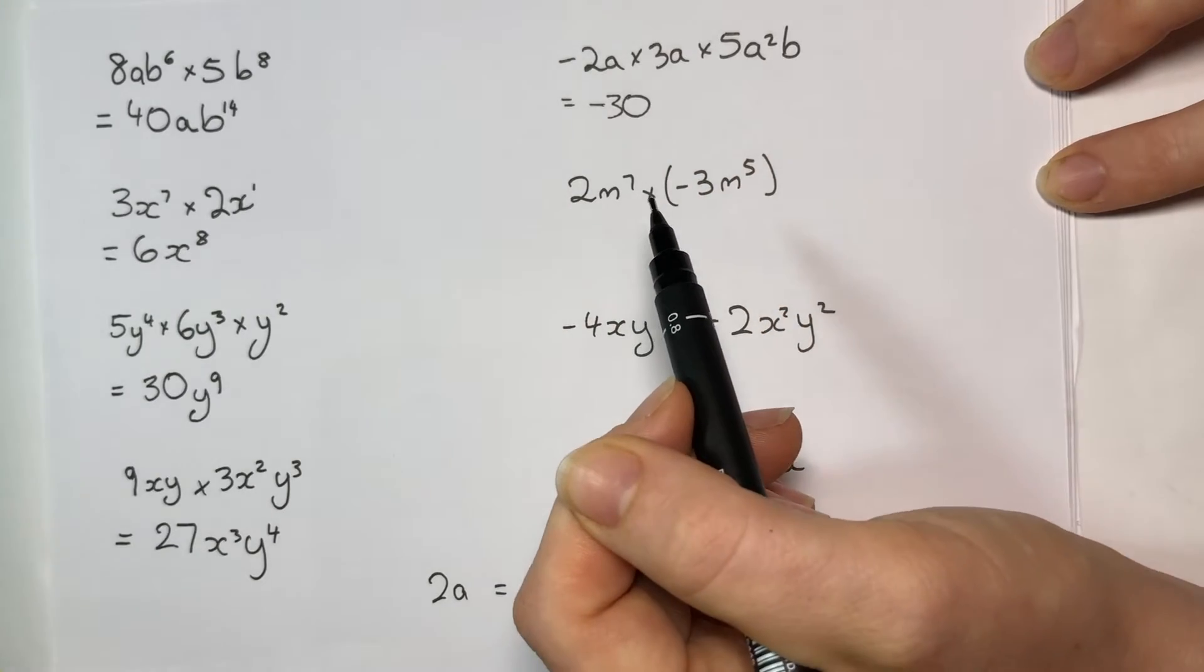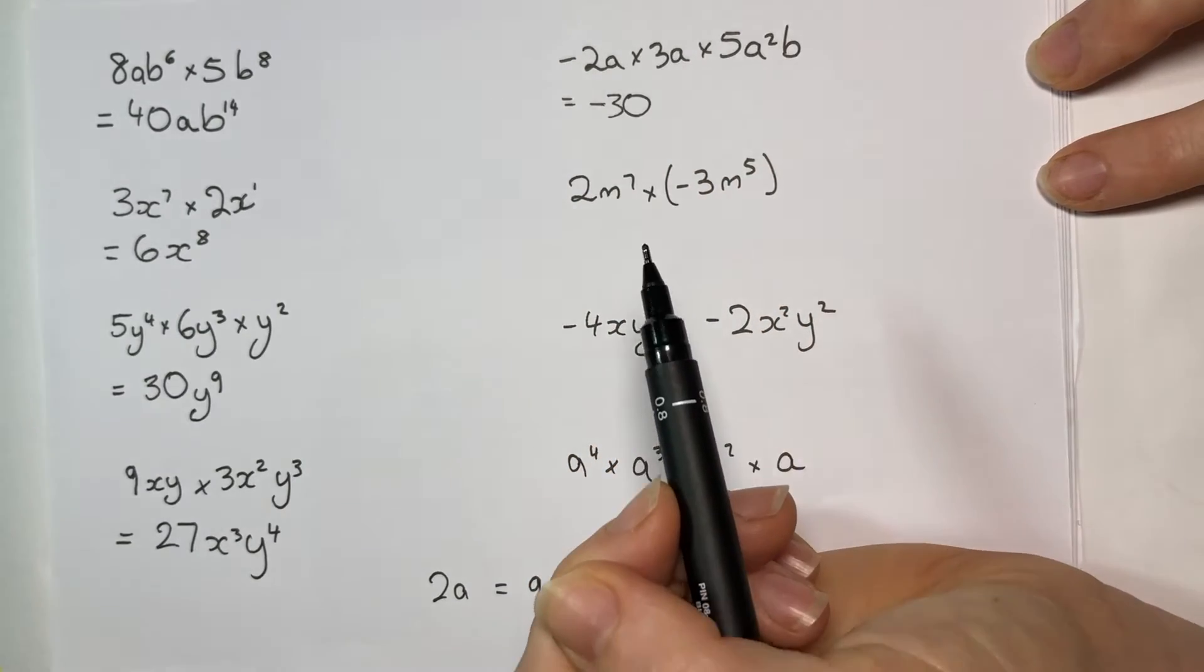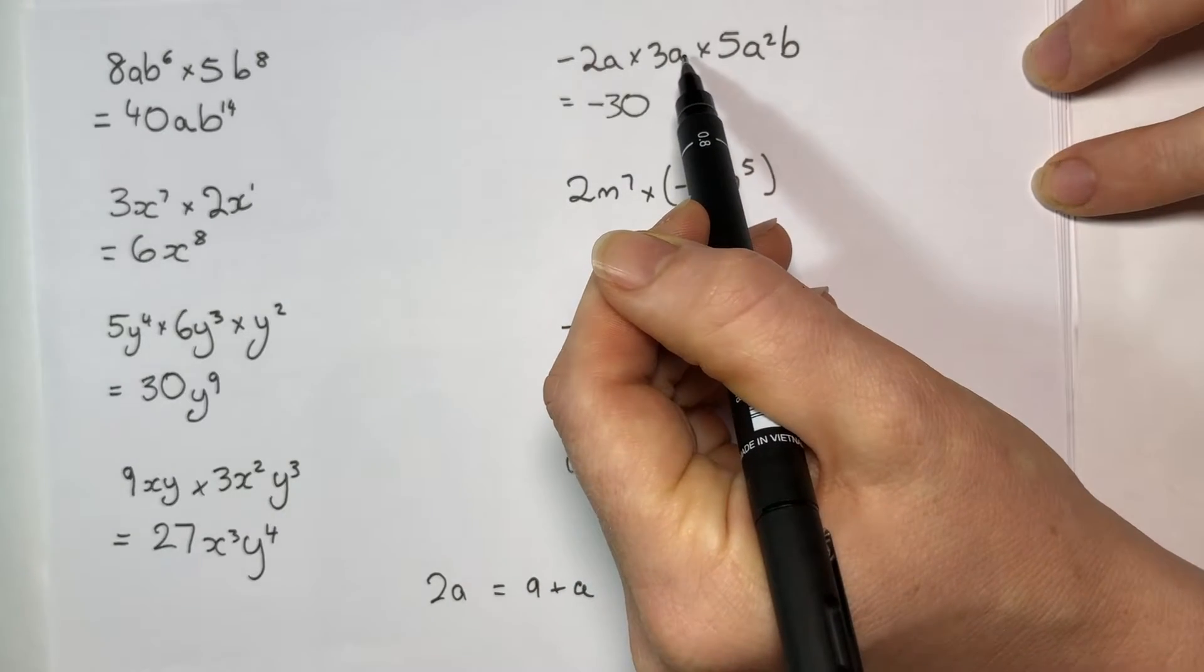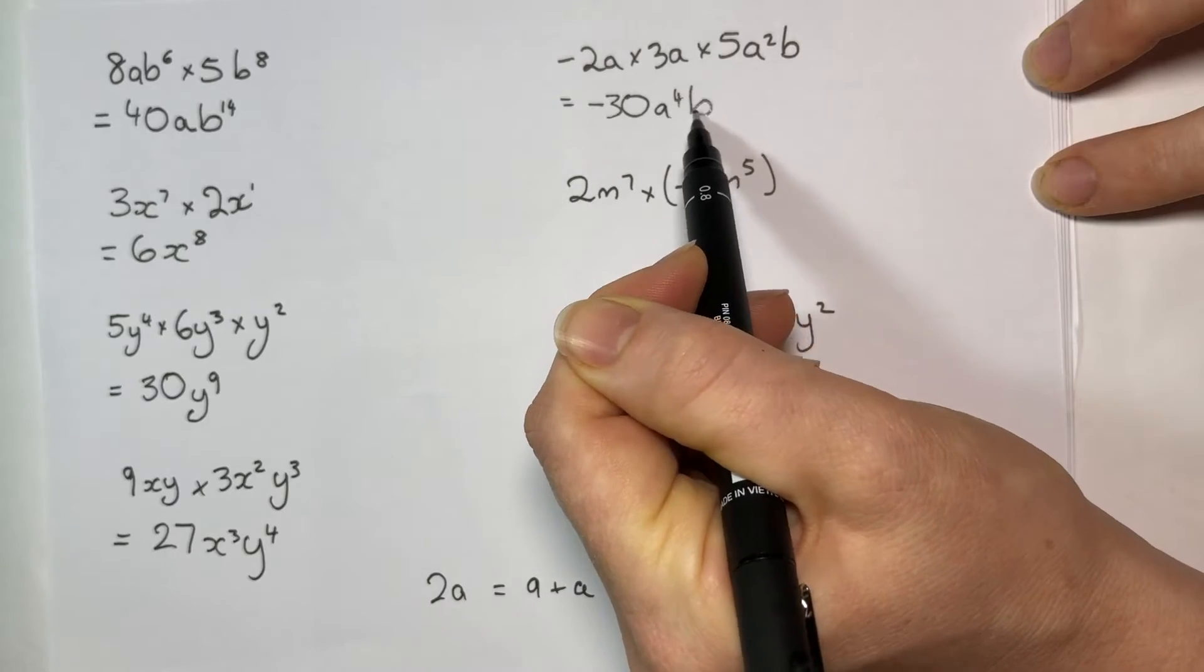All that happens with negatives is when you times by a negative, it goes negative, and if you times by another negative, it goes back positive. So a times a, so there's 2 of them and another 2, so a to the 4, b.